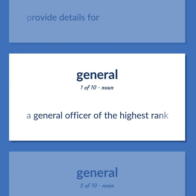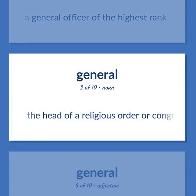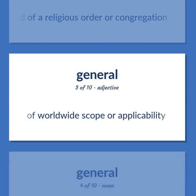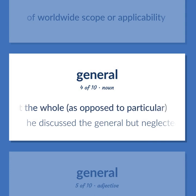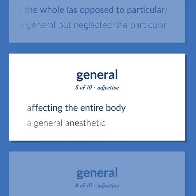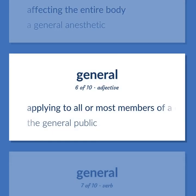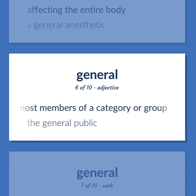General: A general officer of the highest rank. The head of a religious order or congregation. Of worldwide scope or applicability. A fact about the whole, as opposed to particular — he discussed the general but neglected the particular. Affecting the entire body — a general anesthetic. Applying to all or most members of a category or group — the general public.